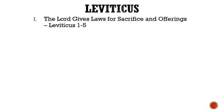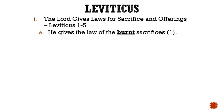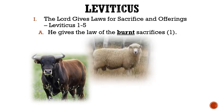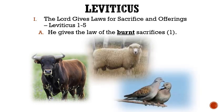Roman numeral 1: The Lord gives laws for sacrifice and offerings. Letter A: He gives the law of the burnt sacrifices. There were three types of animals that could be brought for this sacrifice: a bull, a male lamb, or birds — specifically turtle doves or pigeons.